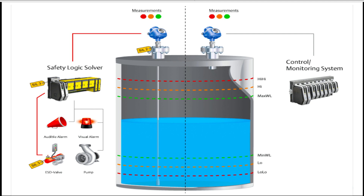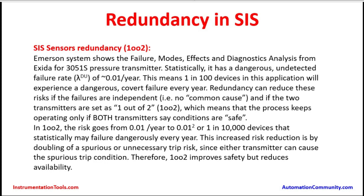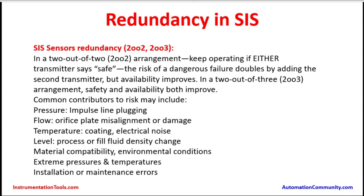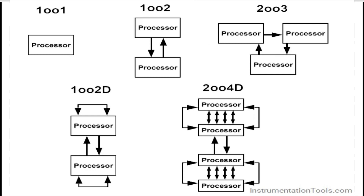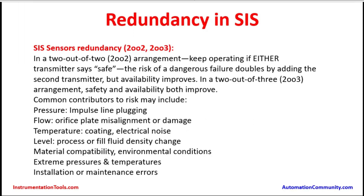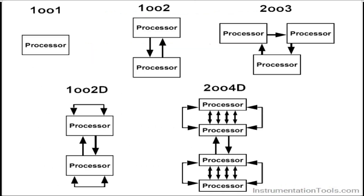Why does availability reduce? In case of any one transmitter failure, the system cannot perform — it requires both transmitters to be in a healthy state. In a two-out-of-two (2oo2) arrangement, the system keeps operating if either transmitter says safe. This means if either one is in safe condition, the system will continue to work. The risk of a dangerous failure doubles by adding the second transmitter, but availability improves, because any one transmitter can support the functionality of the plant.